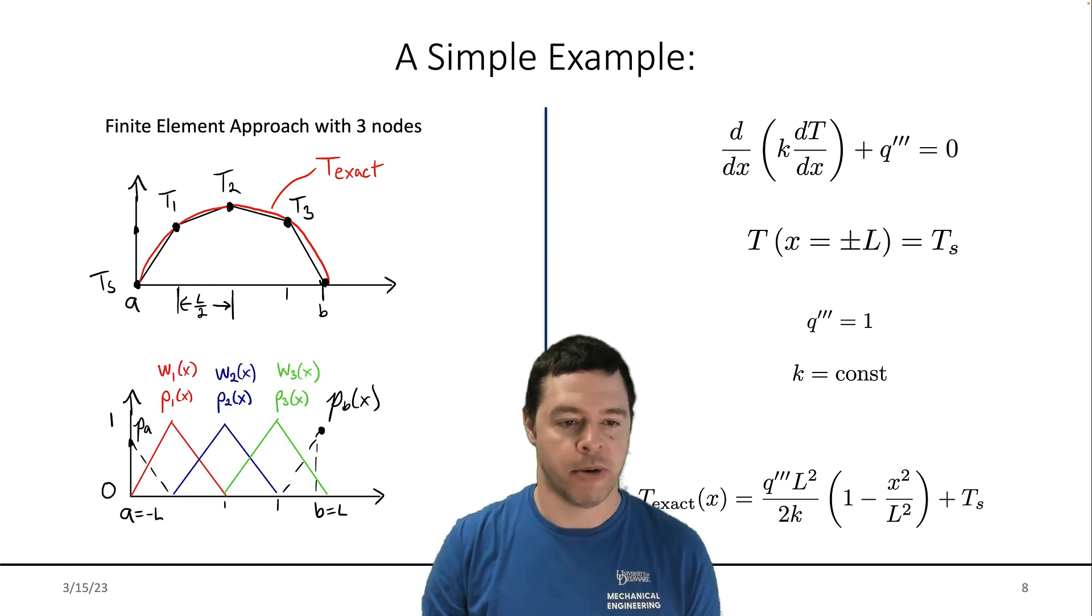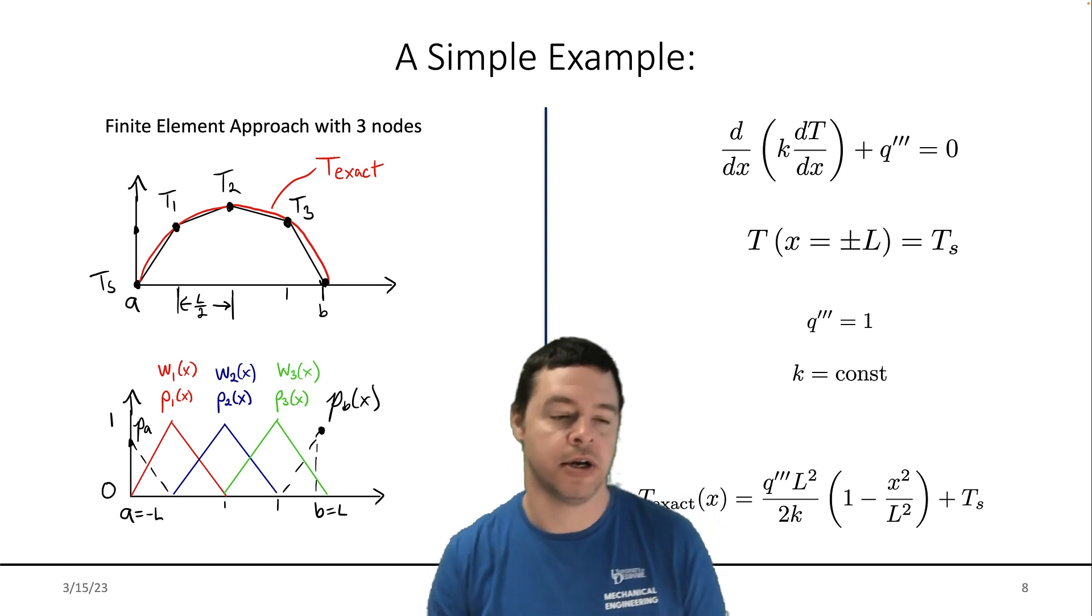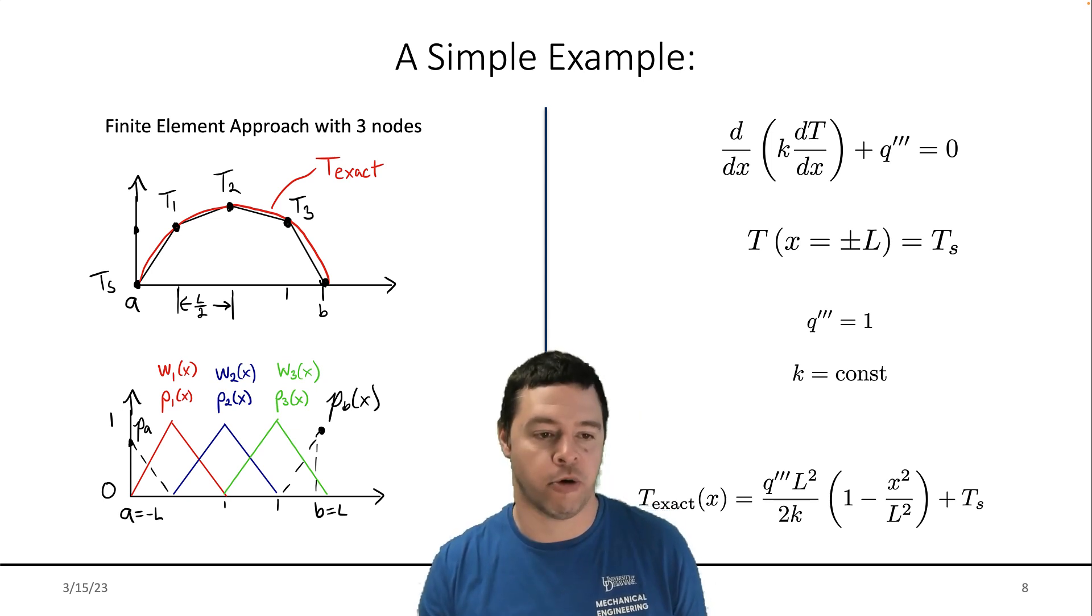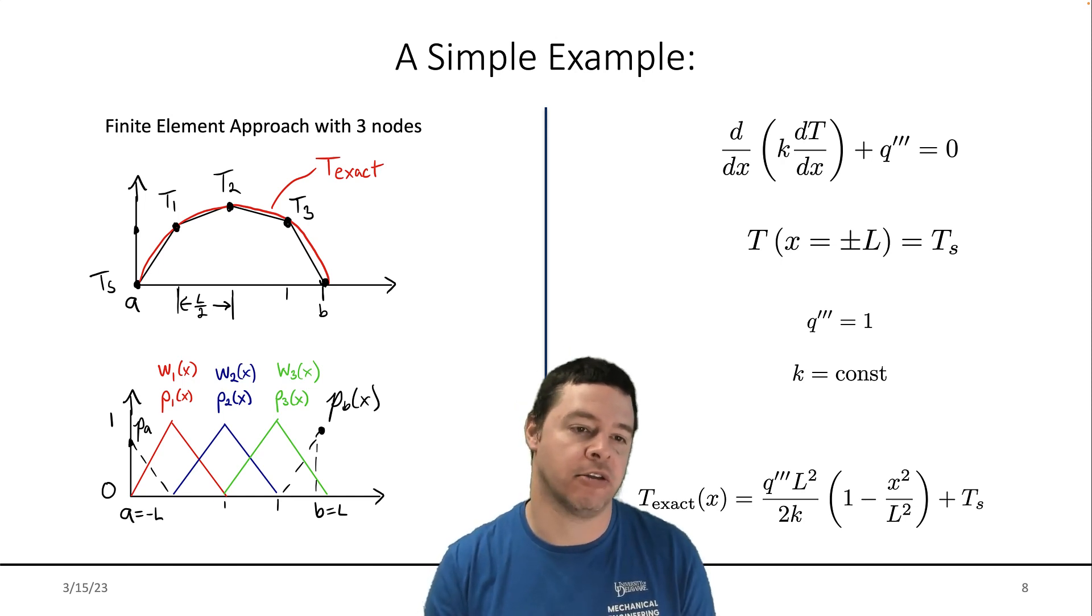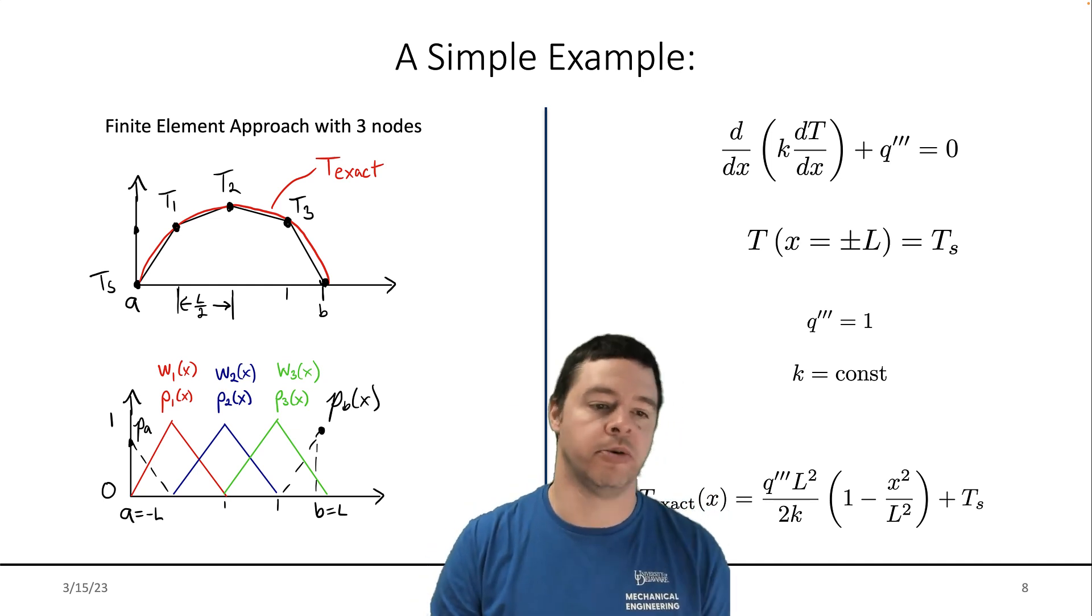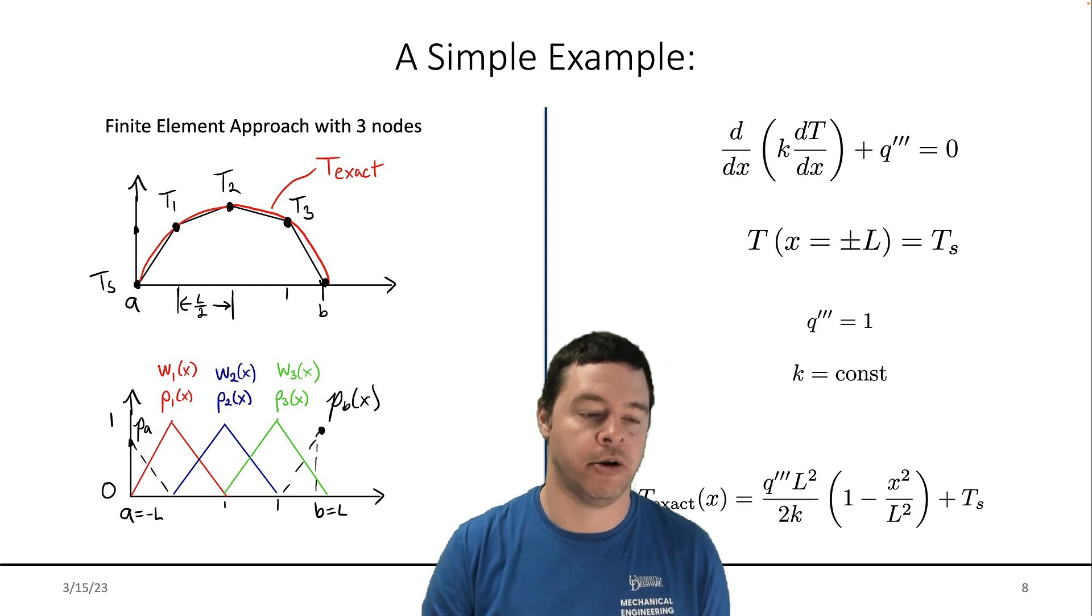So just as a reminder, we're going to use these test functions, these waiting functions to build up our finite element method. Our polynomials for constructing the temperature profile will be these tent functions and the polynomials that we'll use for our test functions. We're going to have to test whether our weak form is satisfied three times to get our three unknowns. So we'll use this red, blue and green set of polynomials.